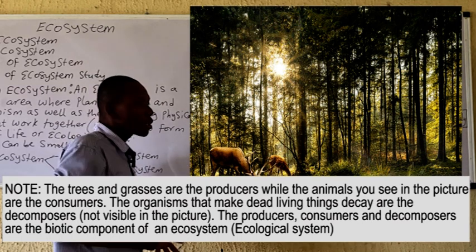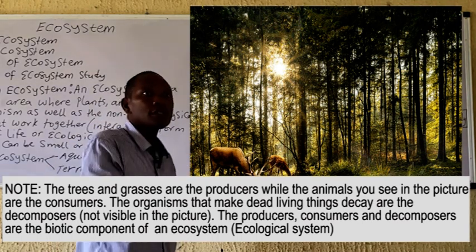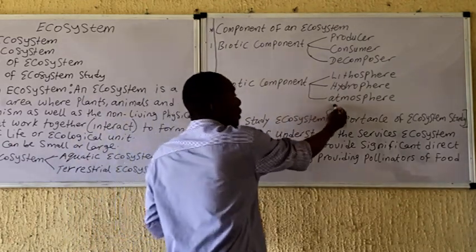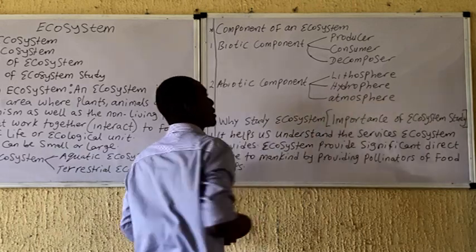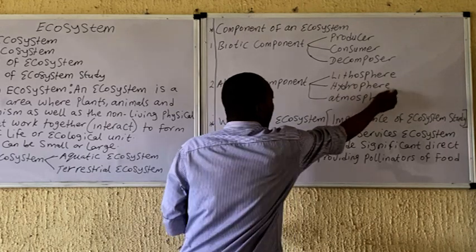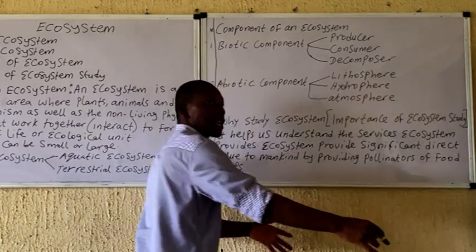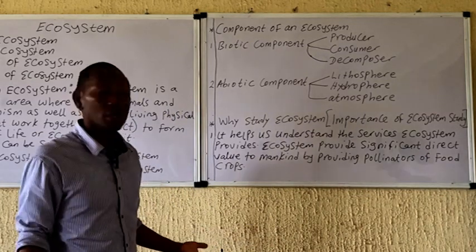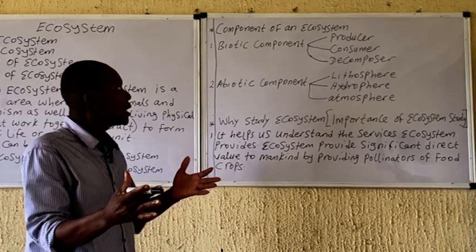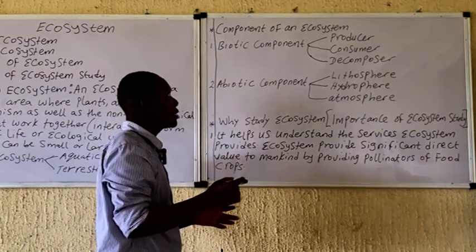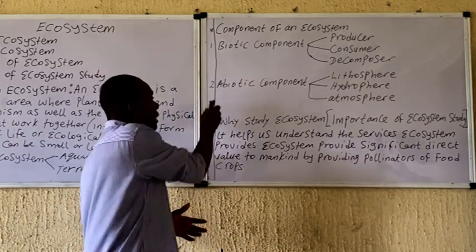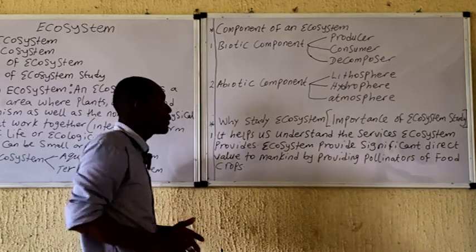The abiotic component of the ecosystem involves the gaseous environment, which makes up the atmospheric components; we have water, making up the hydrosphere; and we have the lithosphere, which is actually the soil or in some cases a rocky environment. In summary, the ecosystem is divided into two components: the biotic and the abiotic.